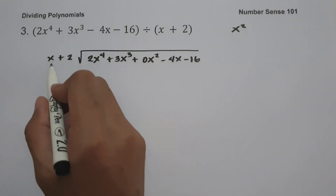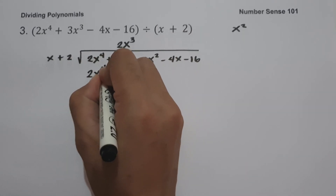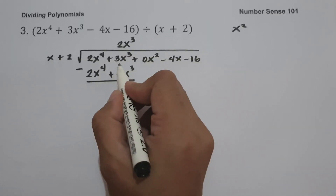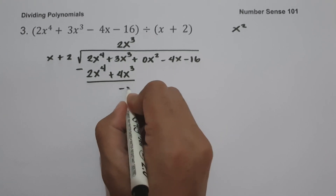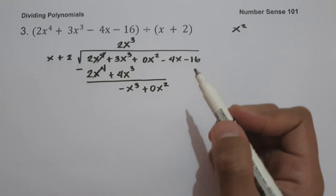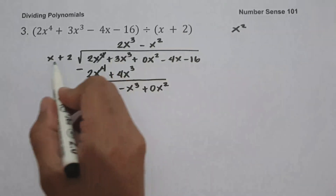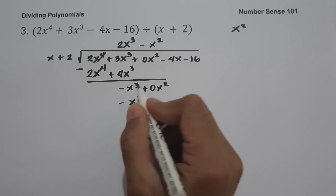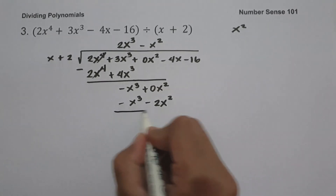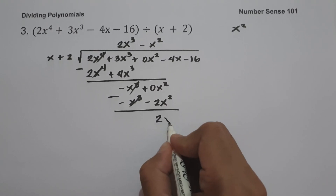So let us have 2x raised to 4 divided by x, which is 2x cubed. Then 2x cubed multiplied by x is 2x raised to 4, and 2x cubed multiplied by 2 is 4x cubed. Let us subtract: 3x cubed minus 4x cubed gives us negative x cubed. Bring down the missing term 0x squared. Then negative x cubed divided by x is negative x squared. Negative x squared multiplied by x is negative x cubed, and negative x squared multiplied by 2 is negative 2x squared. Subtracting: 0x squared minus negative 2x squared gives us positive 2x squared.